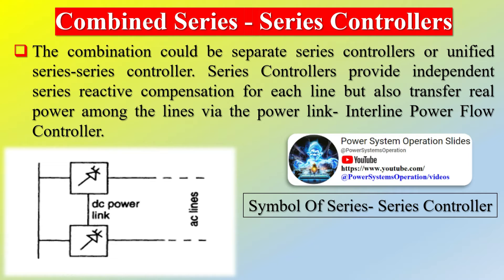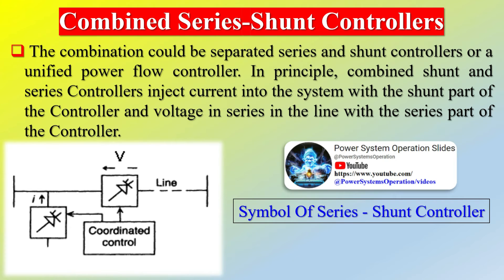Benefits of FACTS devices include: regulation of power flows in prescribed transmission routes; reduction of the need for construction of new transmission lines, capacitors, and reactors; greater ability to transfer power between controlled areas; damping of power oscillations that could damage equipment; and improvement of the transient stability of the system, as well as independent control of real and reactive power flow in the line.